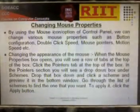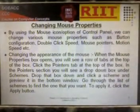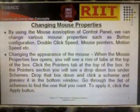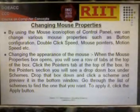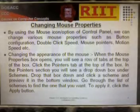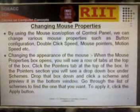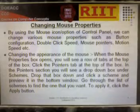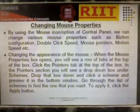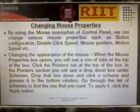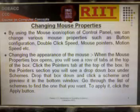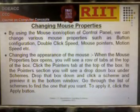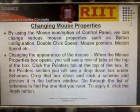Changing Mouse Properties. By using the Mouse Icons option of the Control Panel, you can change various mouse properties such as Button Configuration, Double Click Speed, Mouse Pointers, and Motion Speed.